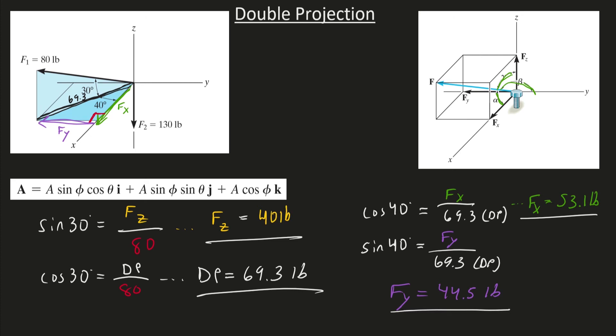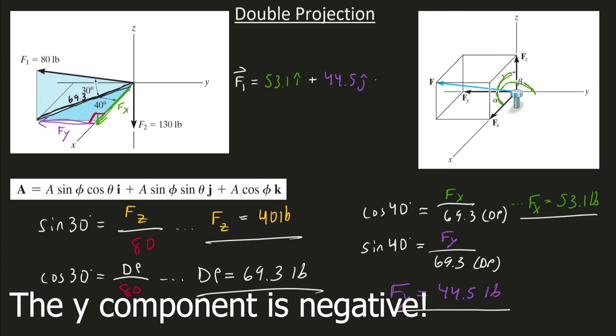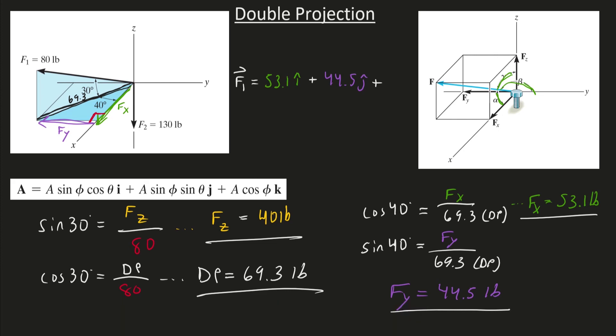So now we can write the full vector, this force vector, in vector form. This force F1 has an X component, 53.1, i hat. It has a Y component, a 44.5, j hat. And the Z component, a 40, k hat. And that's that.